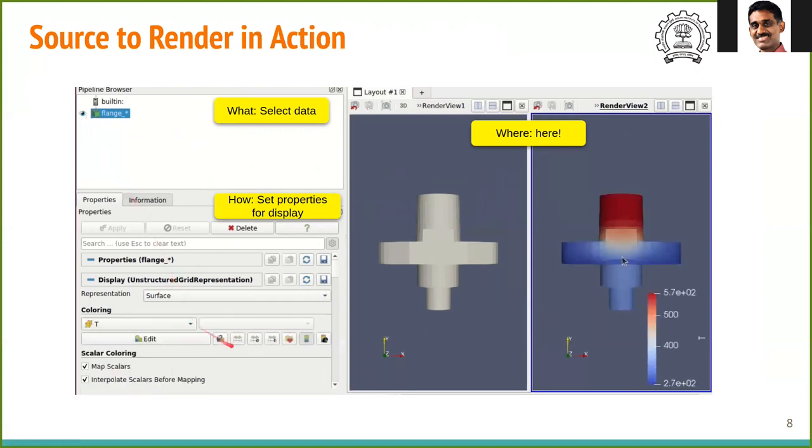After that, we select what to display in the properties. We have here temperature and its gradients. We choose temperature. This displays the temperature in the second viewport.